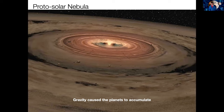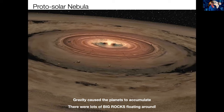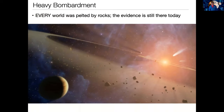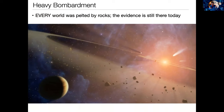Even though the planets themselves form, they don't gather everything up. It's a bit like when you're rolling out a pie crust — you get most of the flour into the crust, but there's still stuff flying around. So in this time, even though planets were condensing, there were lots of big and small rocks floating around in the solar system. In the early days of the solar system — the first hundred million years or so — was a period we call the heavy bombardment, when every world in the solar system was being pelted by all of these leftover rocks and asteroids. We still see evidence for that today if we look around at the various worlds in the solar system.